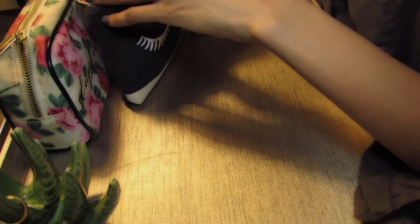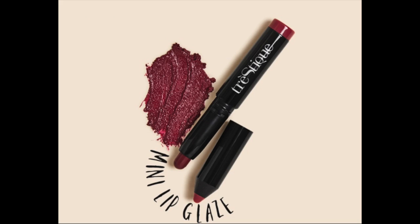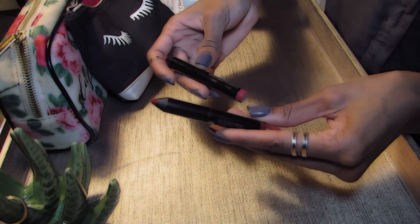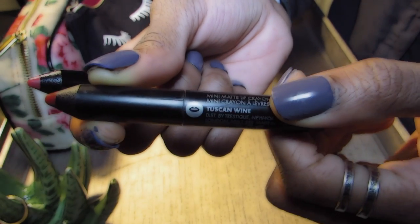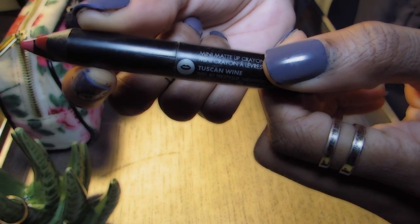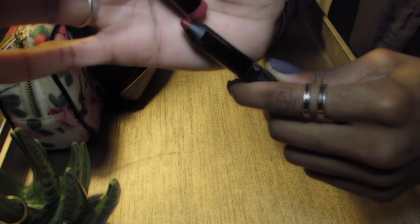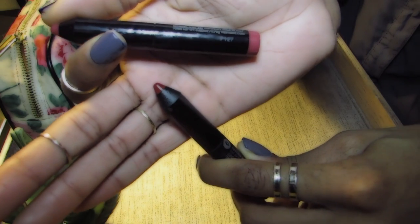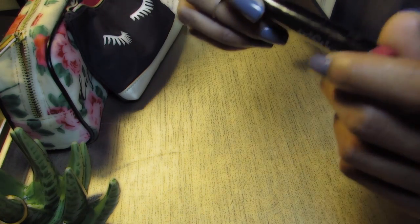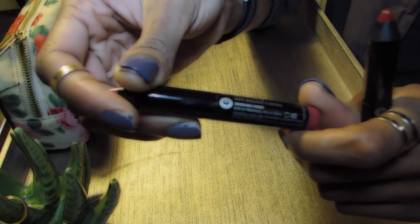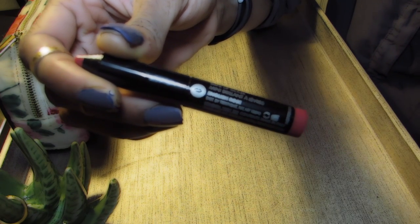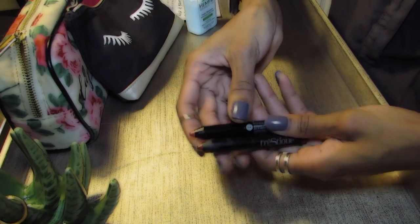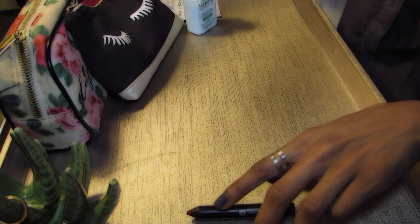Next, we have the Bite Beauty mini lip glazes. I believe it was English Rose, but I also have Tuscan Wine. I was really feeling Tuscan Wine because I don't like lighter colors on me. I like darker colors. I don't care what time of the year it is or what lifestyle you live. I know you're not supposed to wear white after Labor Day. I still don't like light colors on me, so I was really impressed with the darker one.